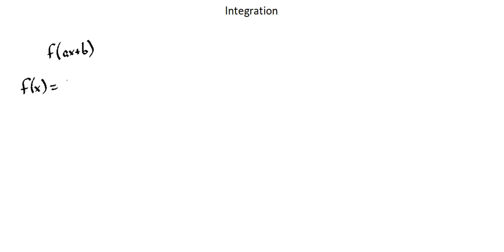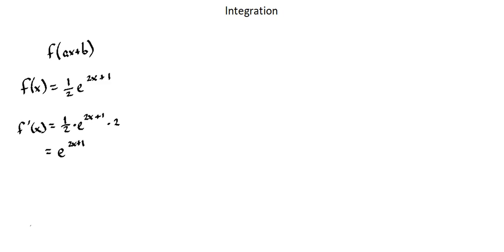If I have the function ½e^(2x+1) and I want to differentiate this function, I have my multiple of ½ times e^(2x+1) times the derivative of the exponent. This is applying the chain rule to exponential functions. The derivative of 2x+1 is 2, and when I simplify, I end up with ½ times 2, which is 1, times e^(2x+1). So let's take the derivative function and make that our actual function: f(x) = e^(2x+1), and think about how we would integrate to reverse the process of differentiation.